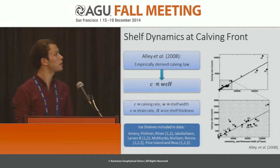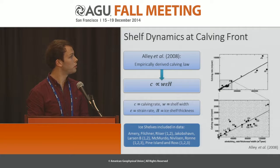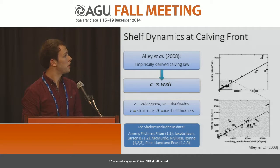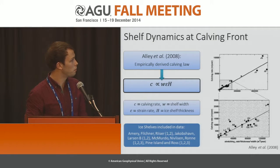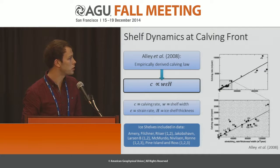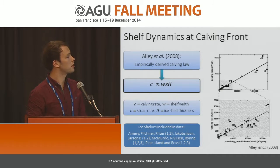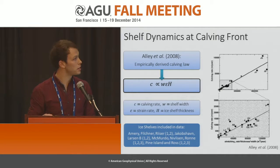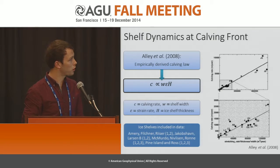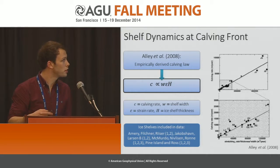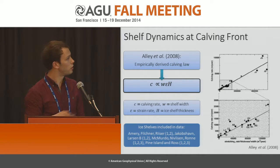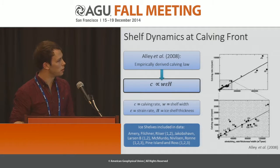In 2008, Alley et al. proposed an empirically derived calving law, which said that the calving rate C was proportional to the width of the shelf W, multiplied by the strain rate epsilon and the shelf thickness H. These quantities were all measured at the calving front, or near the calving front, and the data was taken from shelves with stationary or near-stationary calving front positions.